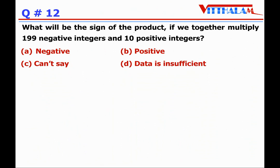Question 12: What will be the sign of the product if we multiply 199 negative integers and 10 positive integers together? There are two types of integers — negative and positive. Any positive integer multiplied any number of times gives a positive sign.